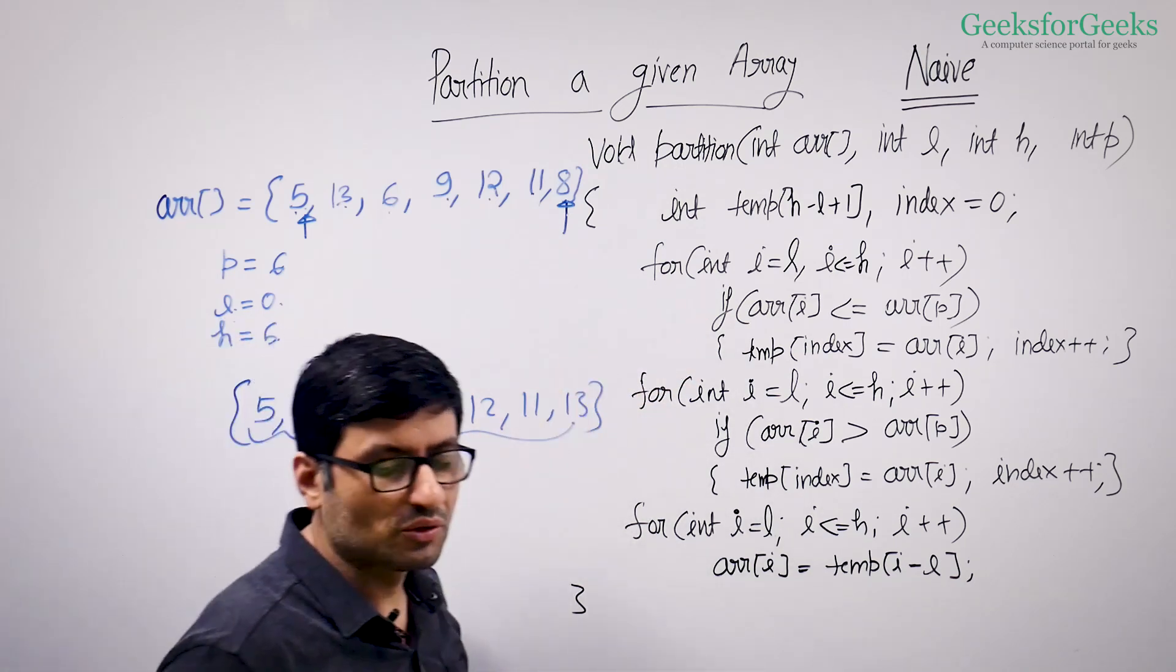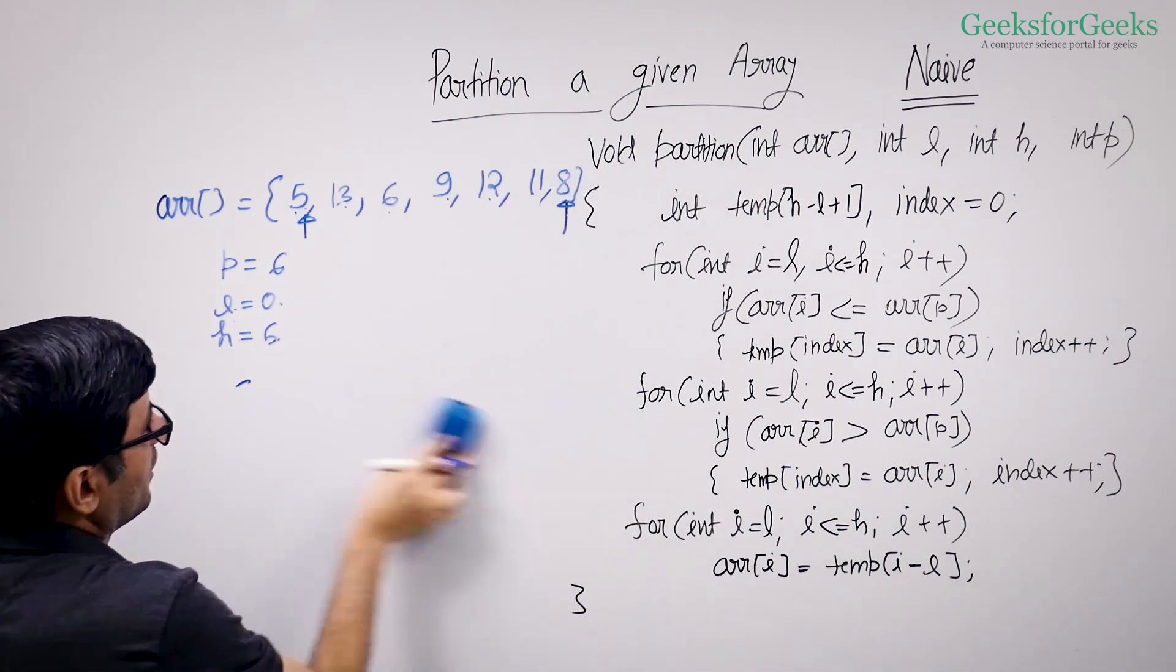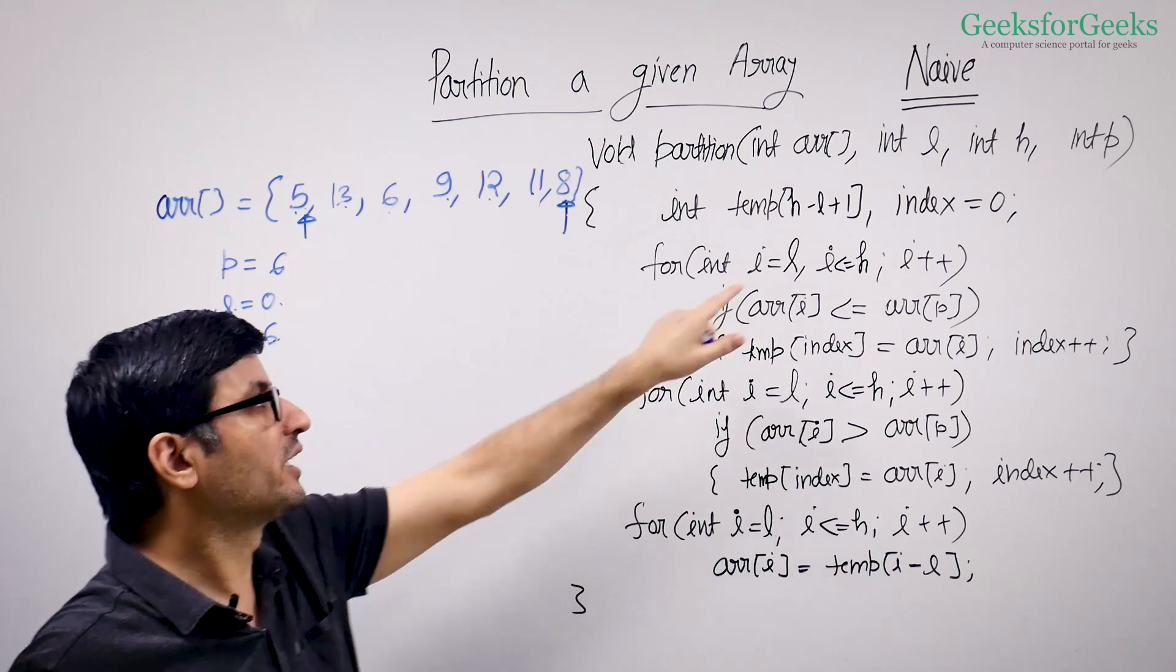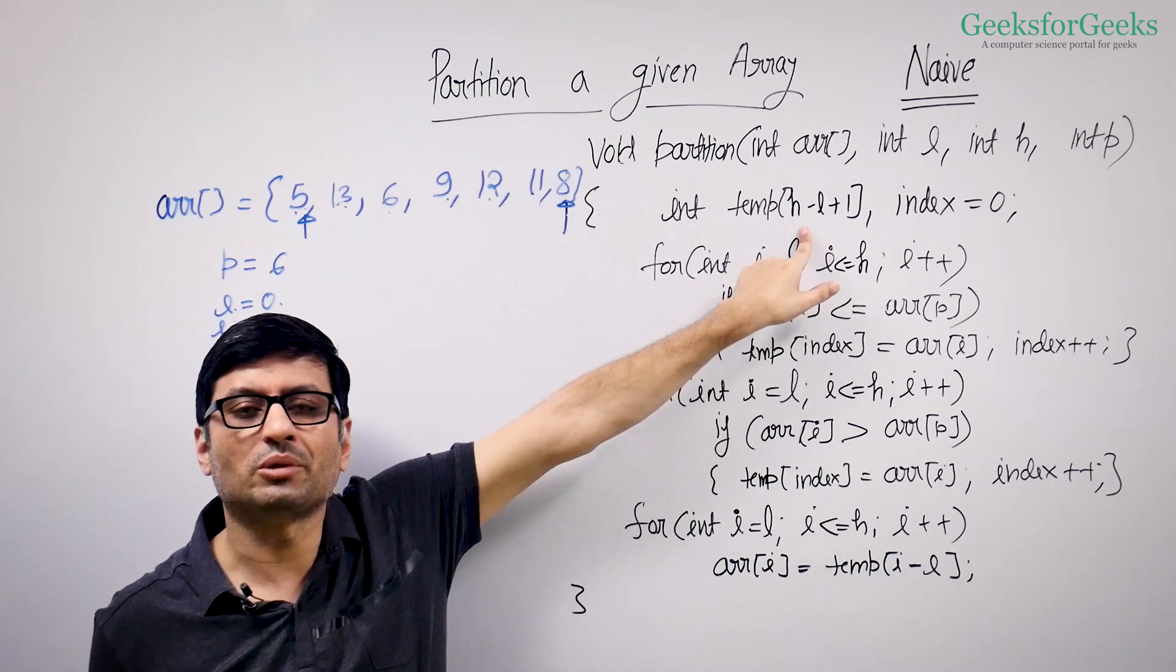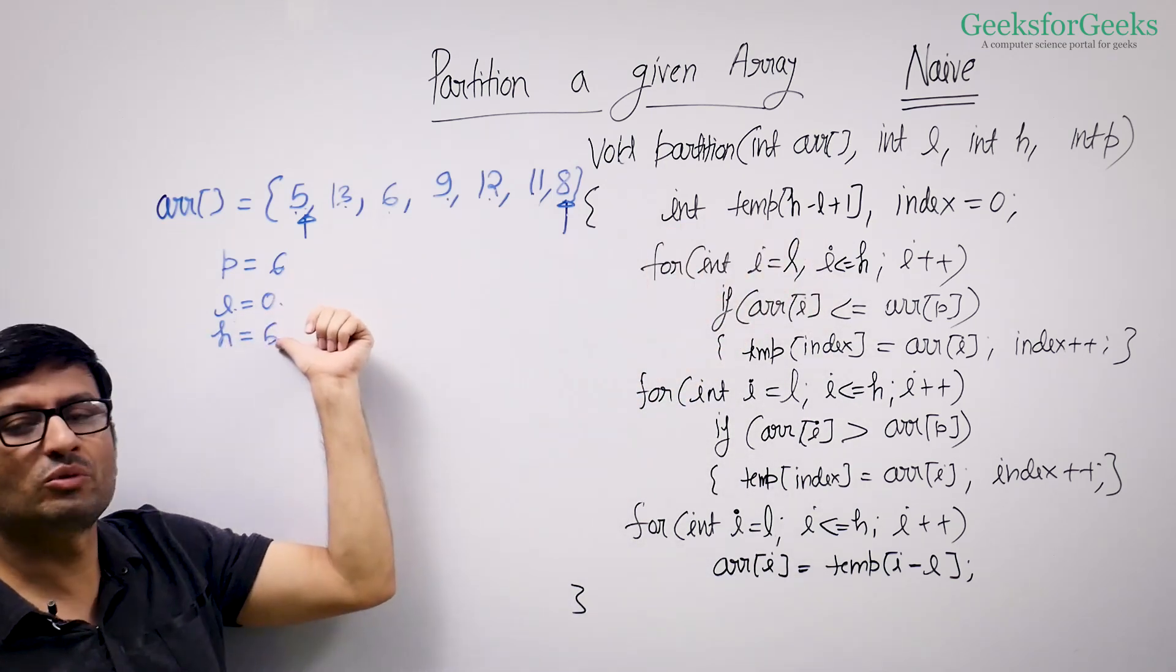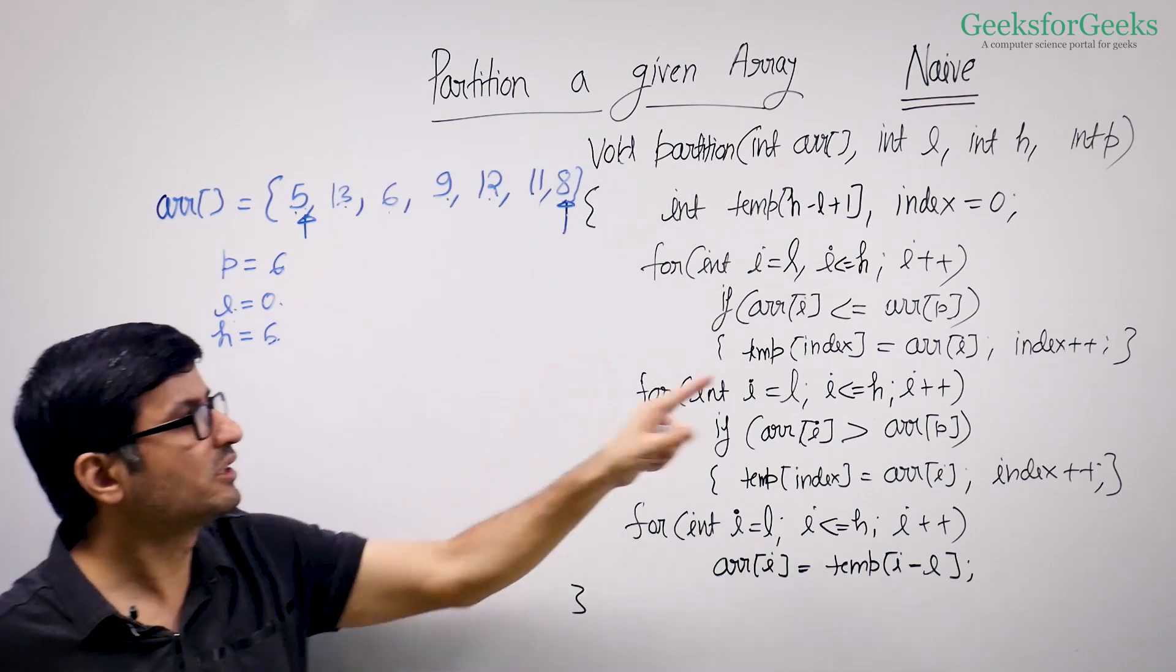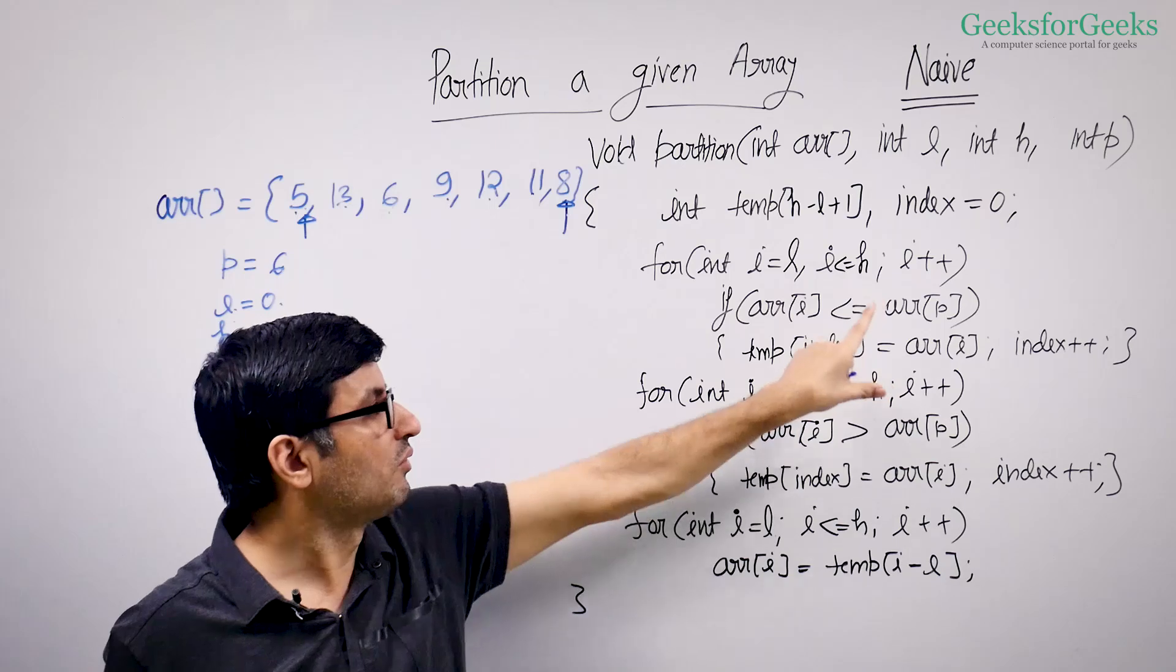Let's see how does this work. How does this partition function, naive function, work that we have written here? So what does this function do? It creates an array of size temp, which can hold all the input elements. How many input elements are there? L is 0, H is 6. So you will have 6 minus 0 plus 1, which is 7 elements. So you create an array of size 7.